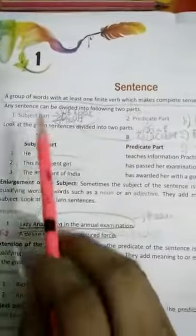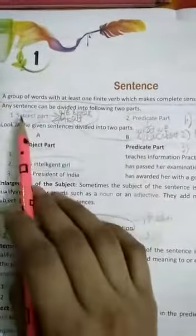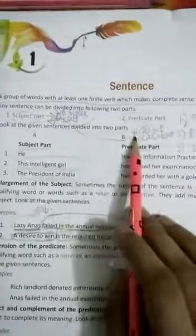So here we have understood that there are two parts of sentence. One part is the subject part and the other one is the predicate part. So what is the subject part? Subject part is about what we speak, jiske baare mein baat ho. And predicate kya hota hai? Subject ke baare mein jo baat ho. Clear?